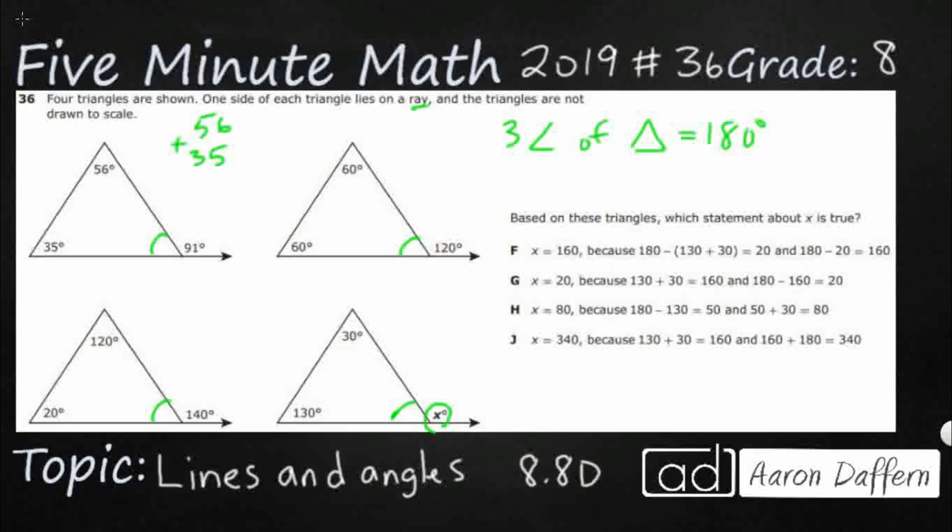Look at what we have here. We have 56 and 35, and then whatever that missing one is. Let's start with this first triangle. 56 and 35 sum to 91, so the missing angle is 89 degrees, because you need that 89 in order to get your 180.